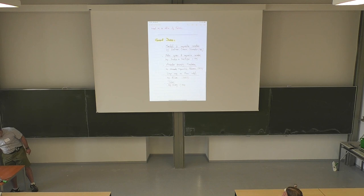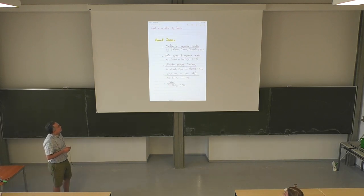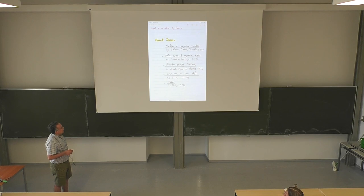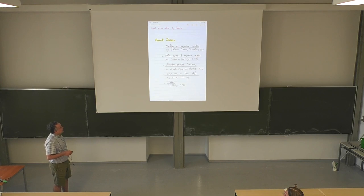For general sources and background on manifolds of non-positive curvature, there is the 1985 book by Ballmann, Gromov, and Schroeder. There's another well-known book on metric spaces of non-positive curvature, or CAT(0) spaces, by Bridson and Haefliger. An excellent and very recent book on Alexandrov geometry foundations by Alexander, Kapovitch, and Petrunin is available on the archive. There is also the book Isoperimetric Inequalities in Riemannian Manifolds by Ritoré, just published, and the book Tubes by Gray, which proves the Steiner formula in Riemannian manifolds.